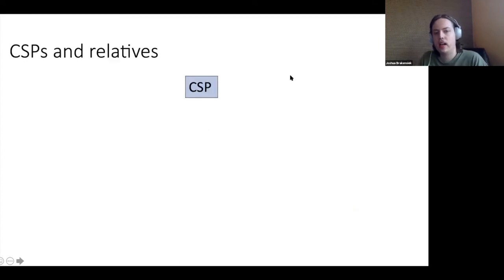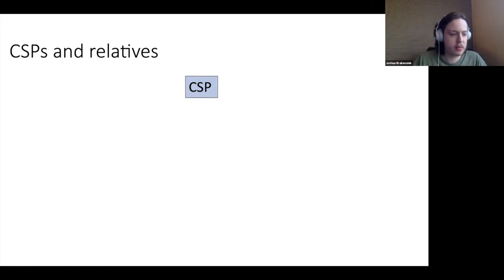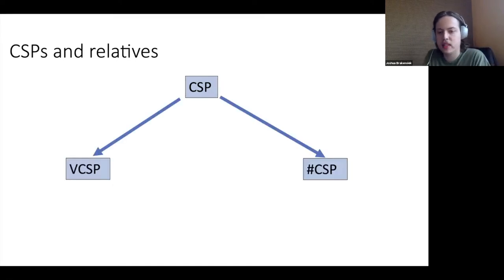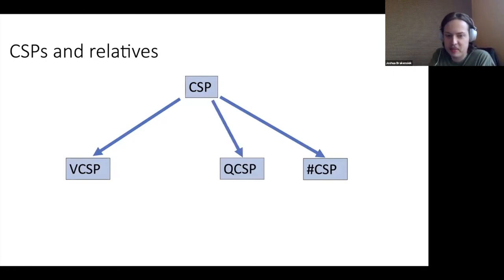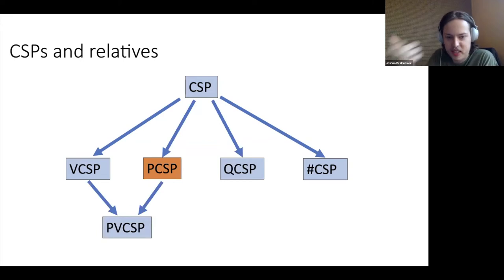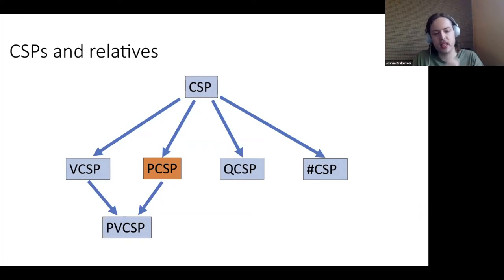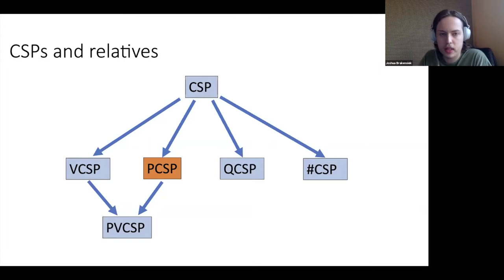To give a high-level picture of what's going on: constraint satisfaction problems are a very vast field, and there have been a number of variants of CSPs of interest for the last couple of decades. These include valued CSPs, counting CSPs, quantified CSPs, and the topic of today's talk — Promise CSPs. Nowadays there are even combinations like promised value CSPs and so on. I'd really like to emphasize Promise CSPs today because they have a rather fundamental importance to this field.